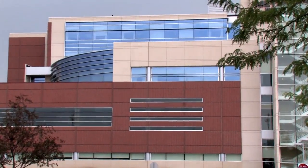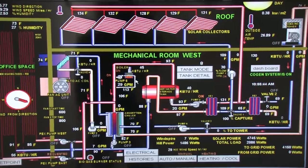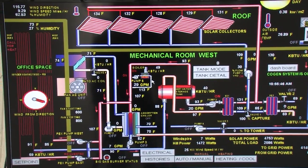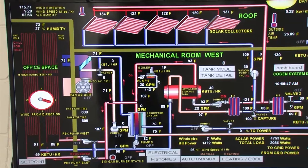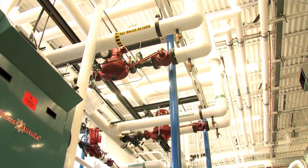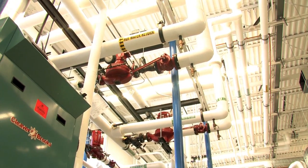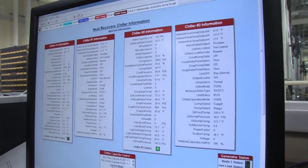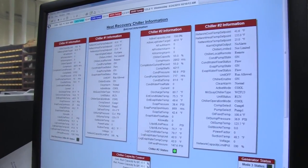The term building automation refers to the automatic control of heating, ventilation, air conditioning, lighting, and other systems through a building automation system, or BAS.